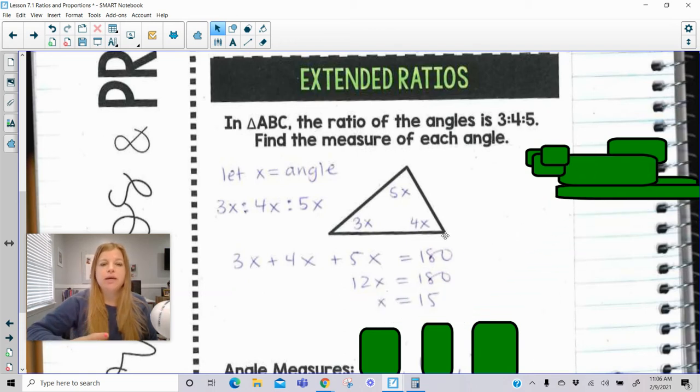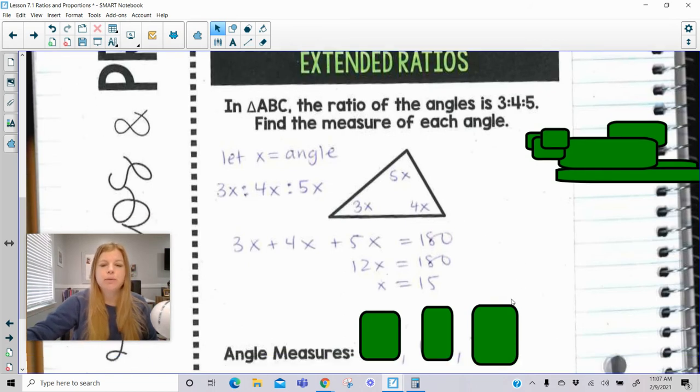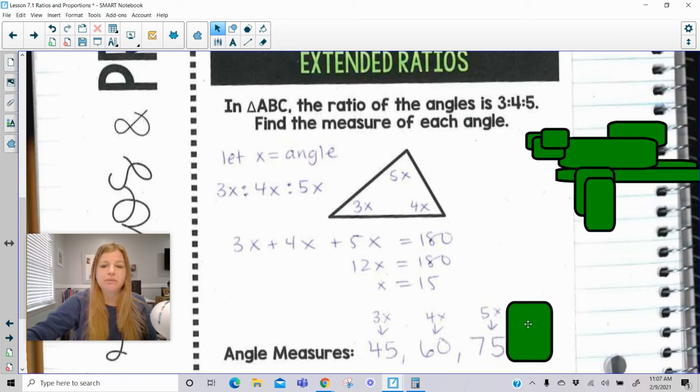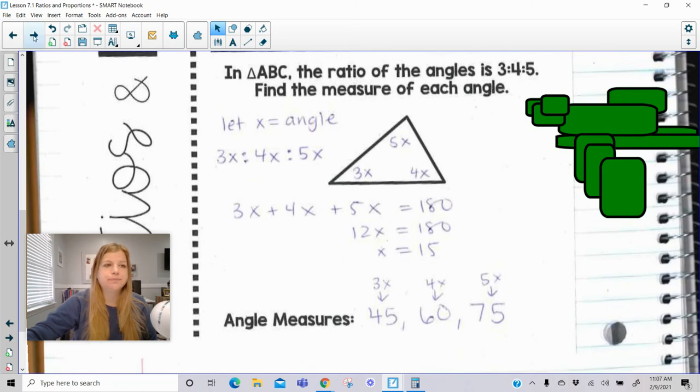But we're not done. x just represents the value of the angle, but remember, the ratio of the three angles is 3 times x, 4 times x, 5 times x. So my angle measures would be 3x, which becomes 45 degrees. The 4x is now 60, because 3 times 15 is 45, 4 times 15 is 60, and 5 times 15 is 75. If I add these up, I'm getting 180 degrees. So these would be my three angle measures. You take this x value, you go back, and you substitute in for each angle, and you get your result.